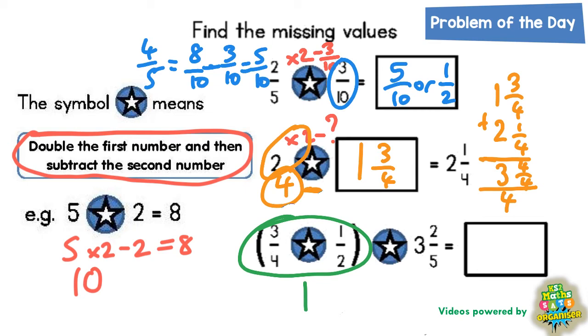But we've then got a second star. And remember the star means double the first number. So times by 2 and then subtract the second number.